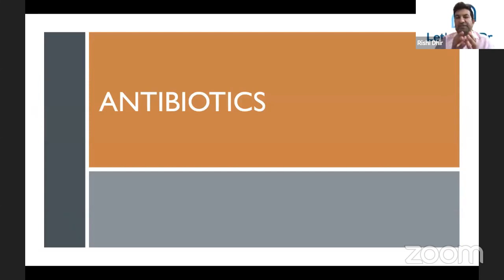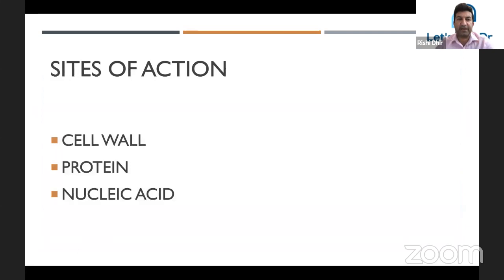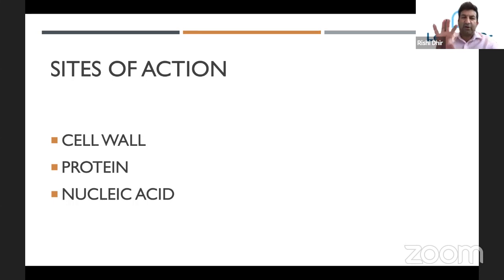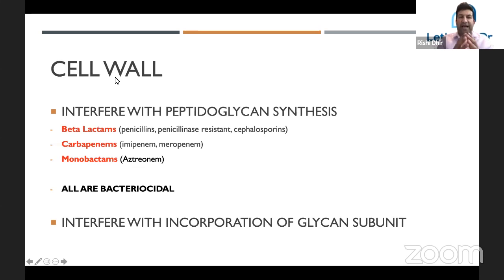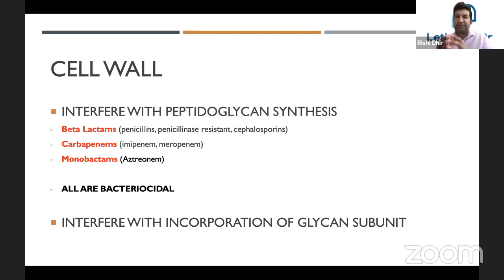The next thing I want to move on to is how do we treat those bacteria — with the use of antibiotics. The way I remember antibiotics is I think back to that diagram of the bacteria: the cell wall, the proteins, 30S and 50S ribosomes, and the nucleic acid — DNA gyrase and RNA polymerase. I think of where do the antibiotics act on those different parts? Those which act on the cell wall interfere with synthesis of peptidoglycans. I think of it like building a brick wall — the peptidoglycans represent the individual bricks. This stops the individual bricks from being synthesized. Those include your beta-lactams: penicillins, or flucloxacillin for penicillinase-resistant organisms, or cephalosporins.